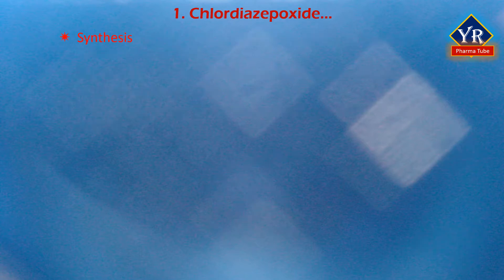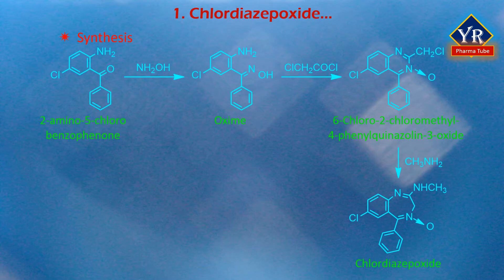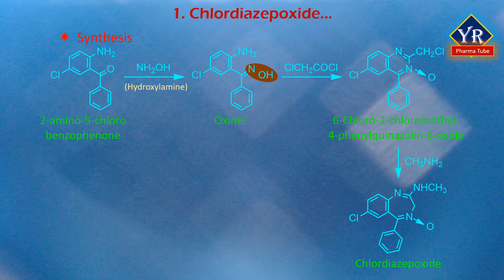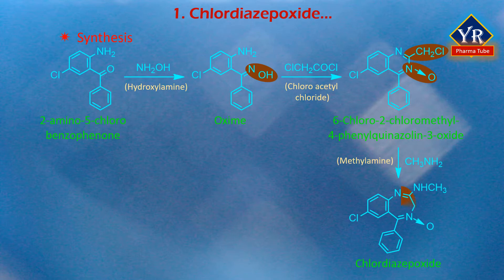Synthesis of Chlordiazepoxide: The synthesis starts with 2-amino-5-chlorobenzophenone. In the first step, 2-amino-5-chlorobenzophenone reacts with hydroxylamine to form an oxime. This oxime in the second step reacts with chloroacetyl chloride, giving 6-chloro-2-chloromethyl-4-phenyl-quinazoline-3-oxide. This intermediate undergoes ring expansion, and in the last step, when boiled with methylamine, it rearranges to yield Chlordiazepoxide.